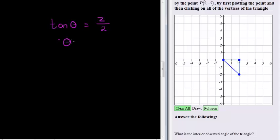So what do I get? I actually get that theta is arctan of 1, because 2 divided by 2 is 1. And what do we get?